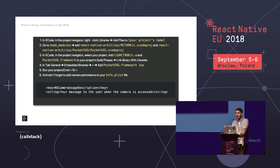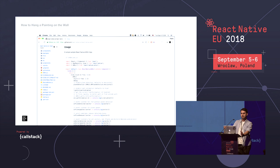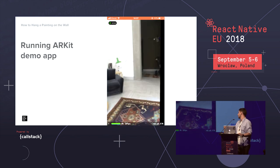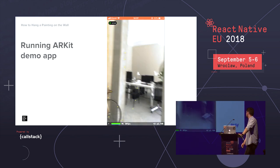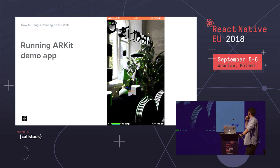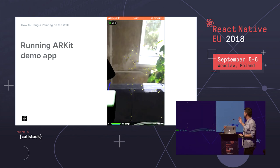Don't forget to add the camera usage description permission to iOS, because you can't use AR without camera access. Once all that's done, go to the readme of the repo, copy the sample application code, start your application, build it with Xcode, and you should see something like this — all the standard objects shipped as part of react-native-arkit.